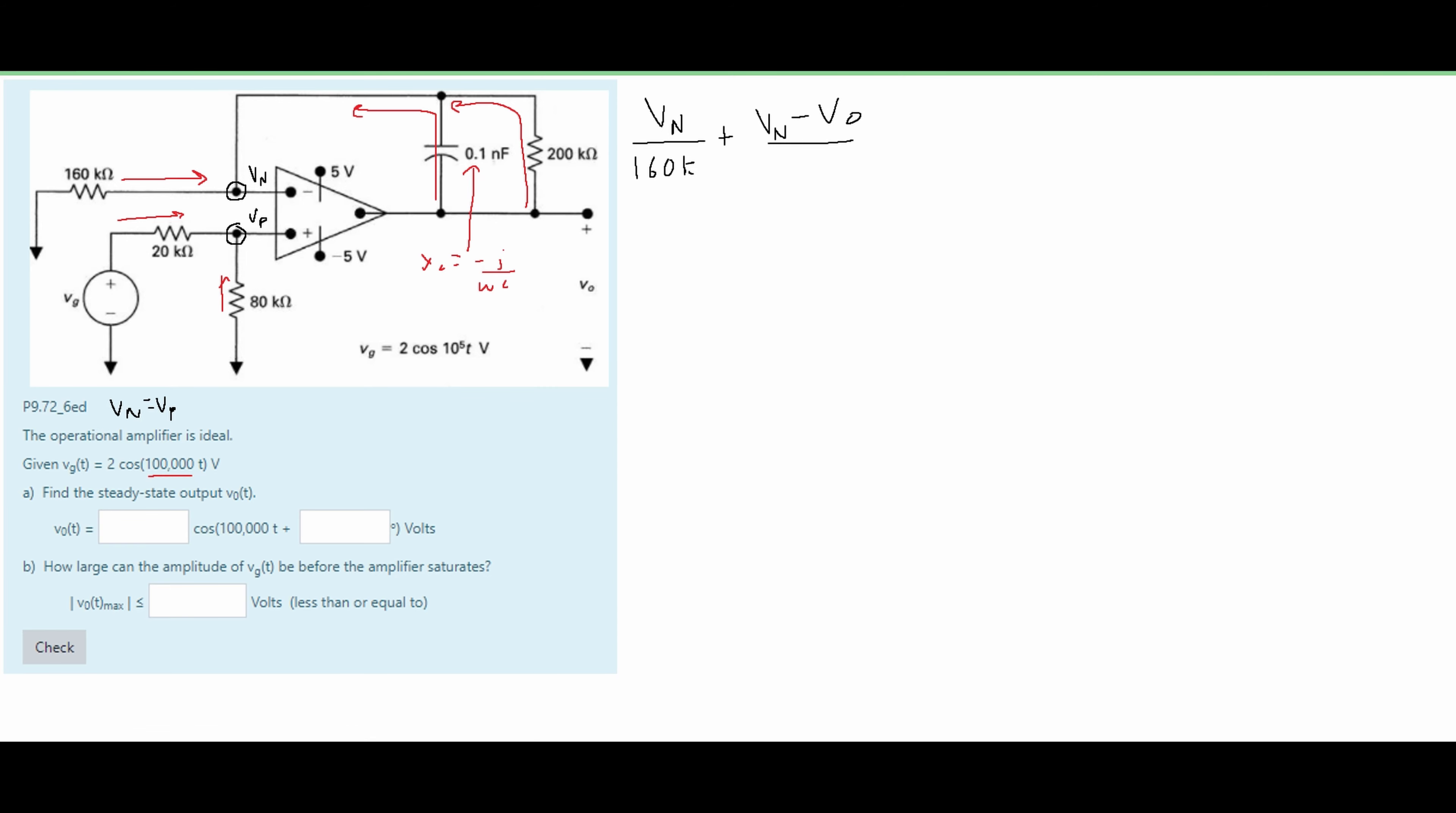And after we do this we are going to get negative 100,000, and I'm going to put this with a K. So we're going to have negative 100K just for simplicity. And to this we will have a plus our VN minus our V0. This is all over the 200 kilo ohm resistor. We're setting this equal to 0 for the node voltage method.